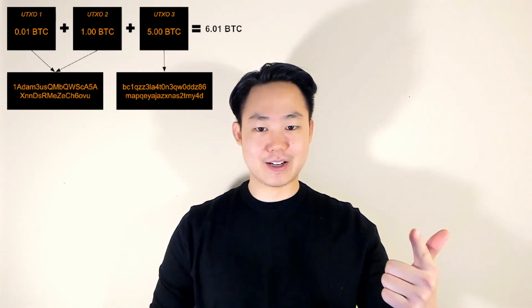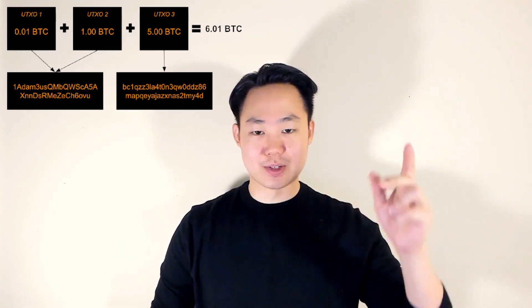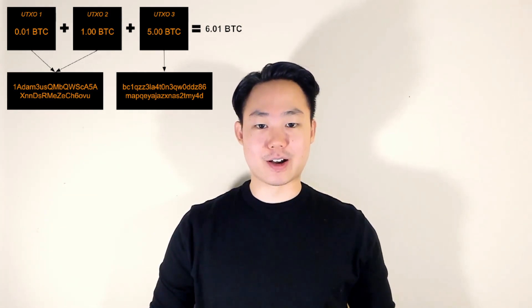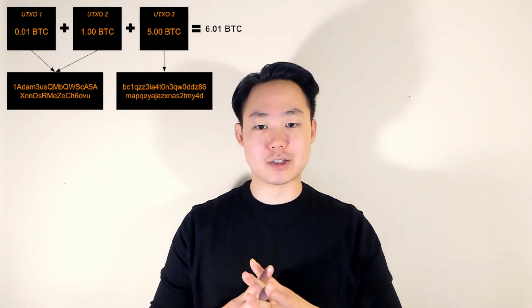So how does this relate to UTXOs? Well, let's change the units from dollars to Bitcoin, and for simplicity's sake, ignore the exchange rate. You have a 0.01 BTC, a 1 BTC, and a 5 BTC as three individual UTXOs inside your wallet. Your wallet calculates your balance of 6.01 BTC by adding these UTXOs together. You pay for your 5.98 BTC snack using your 1 BTC UTXO and your 5 BTC UTXO.